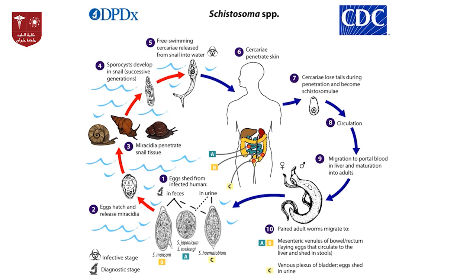An important question is whether there is an animal reservoir for schistosomiasis. Yes — rats are very important reservoirs in Egypt. They have kept the cycle alive from pharaonic times to the present, as rats live mainly on the shores of the Nile and can be infected just like humans. Therefore, one of the important control measures is the control of rats on the Nile shores to break the cycle of infection.